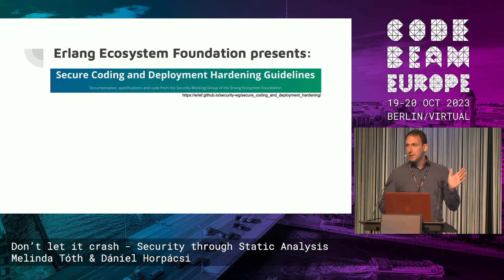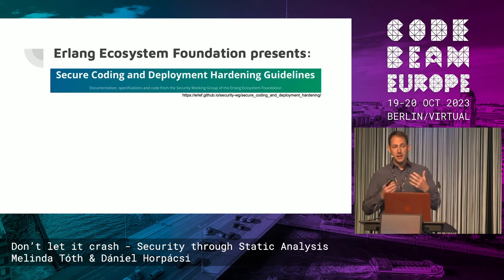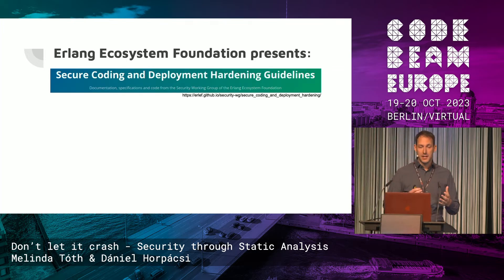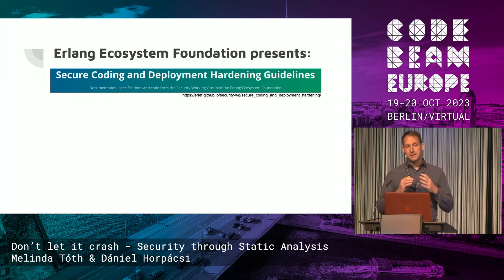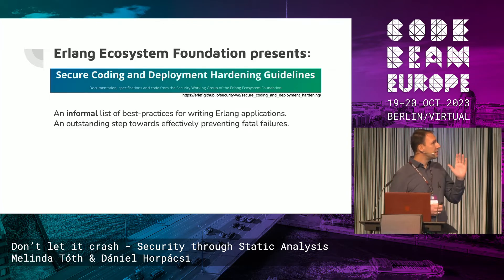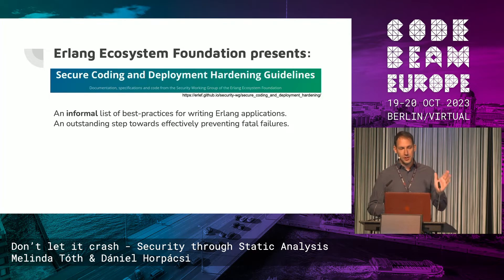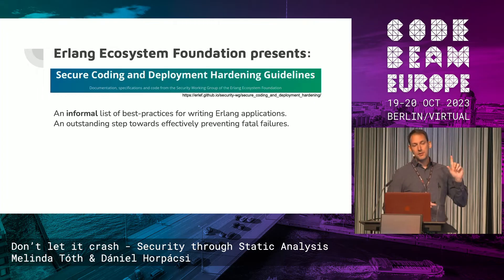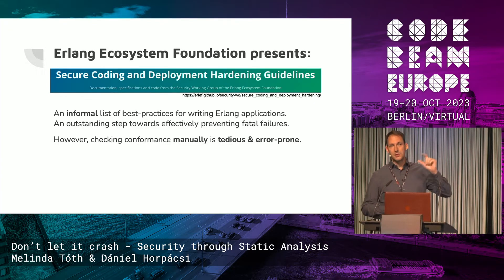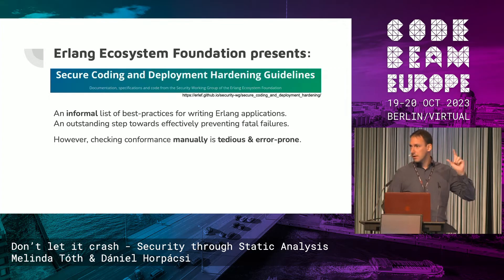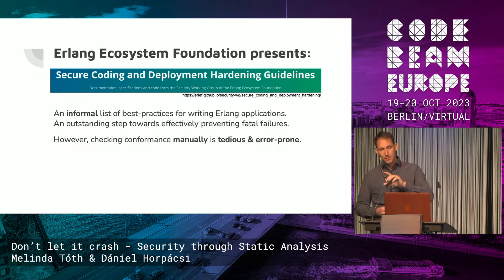Most of the vulnerabilities we look for are actually documented in the Erlang Ecosystem Foundation. They have nice documentation where they provide guidelines and rules to follow if you want to code secure Erlang systems. This is an informal list of best practices — that's very important. It's an outstanding achievement. But what matters here is the word informal — it's in English. So if you want to check your system for compliance, you go to the guidelines, read it, understand it, then go back to your code and check whether it's compliant. You have to do it by hand.